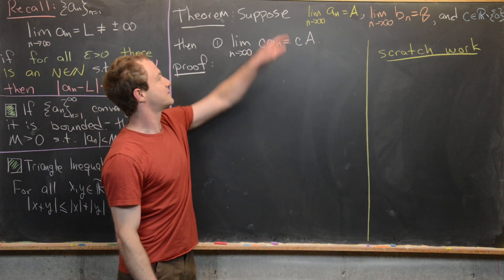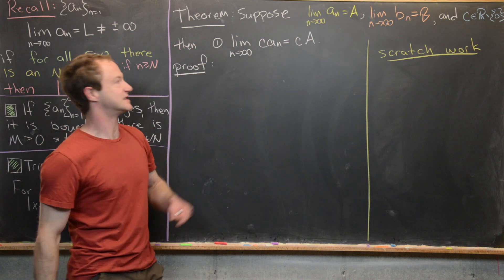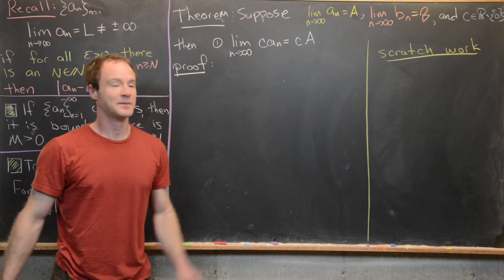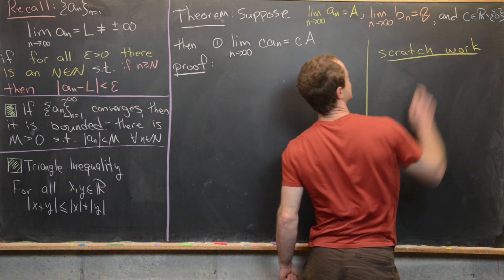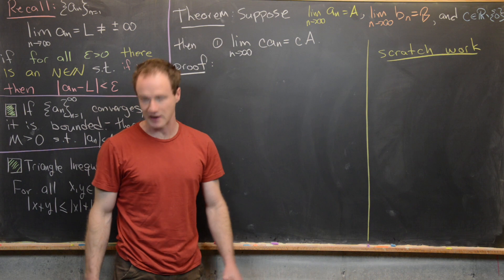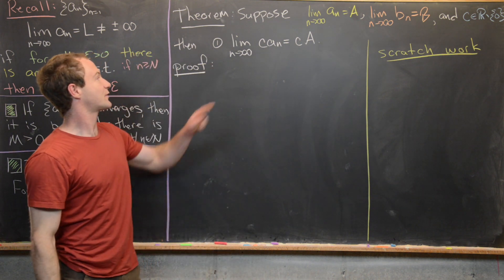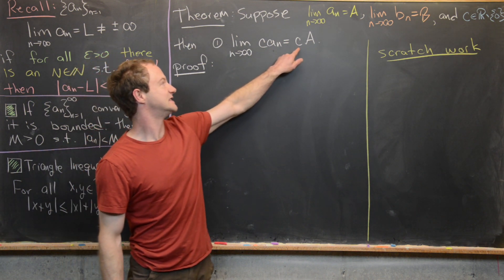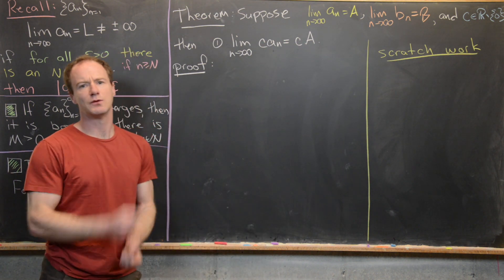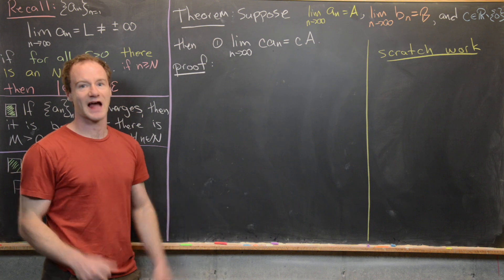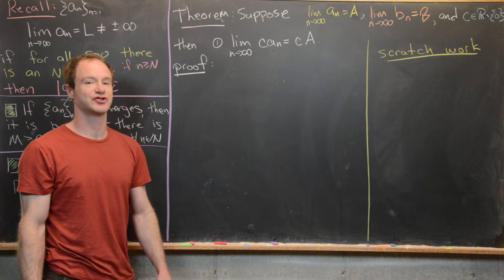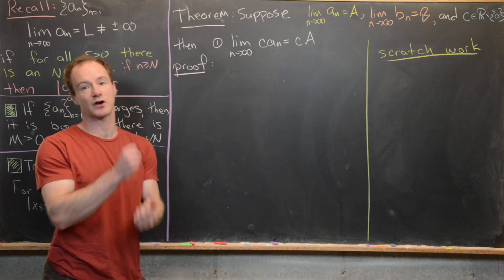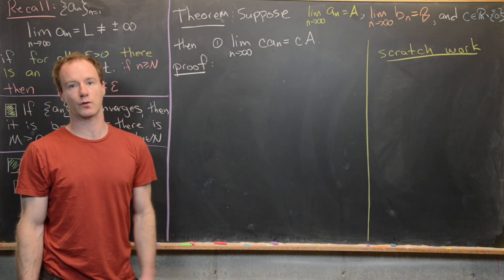We're going to suppose that we have two convergent sequences: a sub n converges to a, and b sub n converges to b. We also have a real number c, and we're going to prove four different algebraic properties. We'll use the standard strategy of first working through scratch work starting from the end, then rewriting the proof in the correct order.